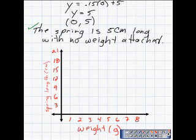We have one final thing to do here. We need to graph the equation. And to do that, we'll first start off by graphing this ordered pair or the y intercept. When the weight was 0, the length of the spring was 5 centimeters. So when the weight was 0, we could estimate 5 would be right about there.